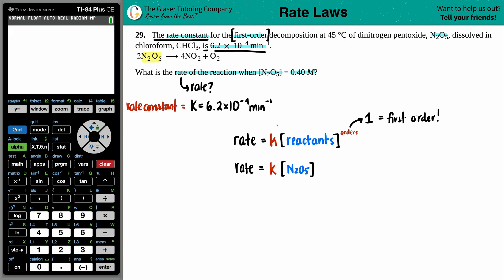So now we're ready to just plug it in. They want us to find the rate. So rate equals the K value. We know what the K value is: 6.2 times 10 to the negative fourth. And then they told us the concentration of N₂O₅ was 0.4. Let's figure it out. Rate equals 6.2 times 10 to the negative four times 0.4. And everything looks good to me. So that's my rate: 2.48 times 10 to the negative fourth.